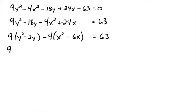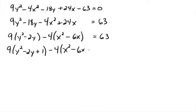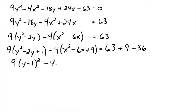To complete the square for the y's: half of 2 is 1, 1 squared is 1, so we add 1 inside. But we really added 9 to that side (because of the factor of 9), so add 9 to the right side. For the x's: half of 6 is 3, 3 squared is 9, so add 9 inside. But that 9 was inside a factor of -4, so we really added -36 to that side — add -36 to the right side. Then factor: 9(y - 1)² - 4(x - 3)² = 36.